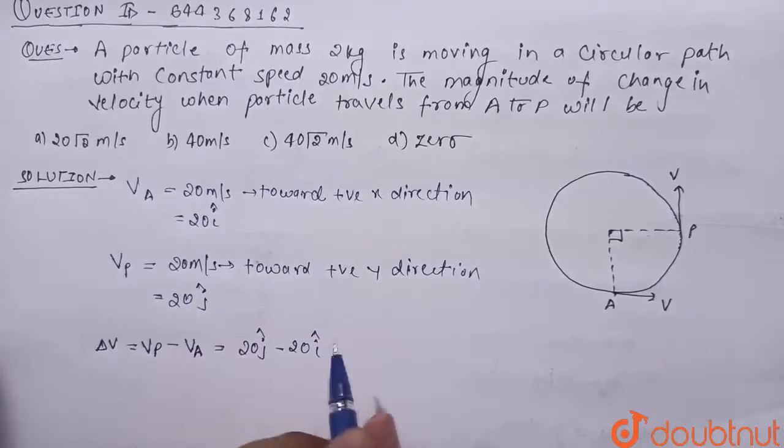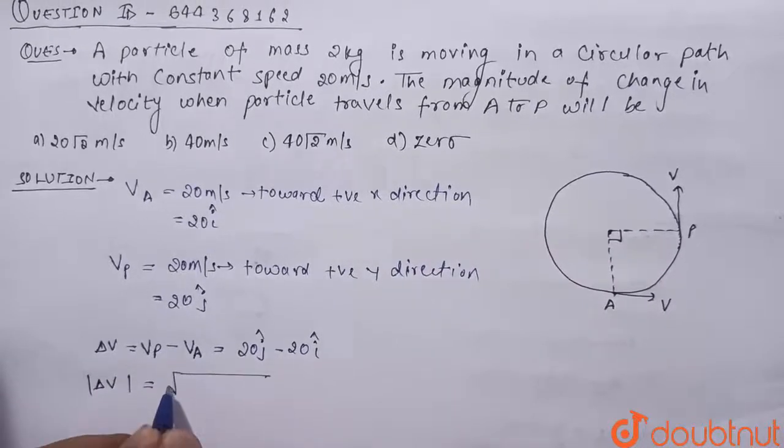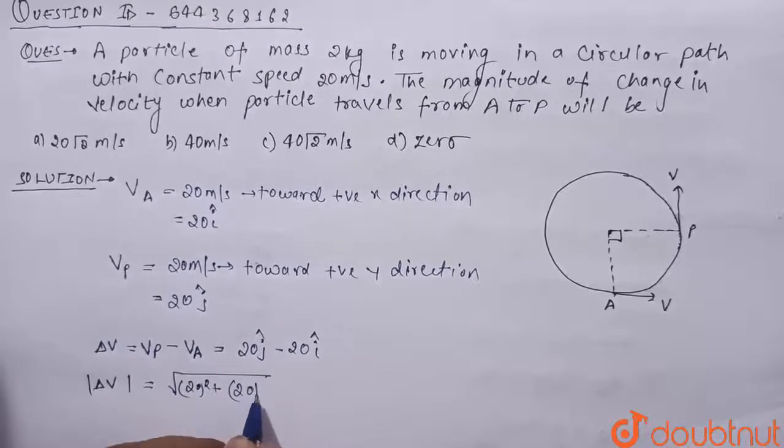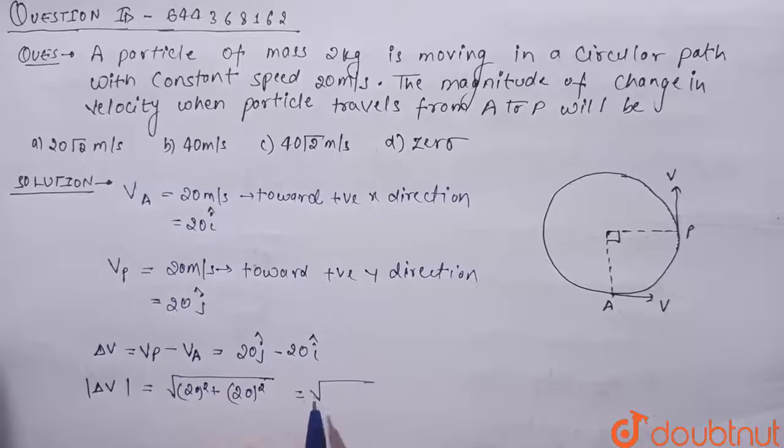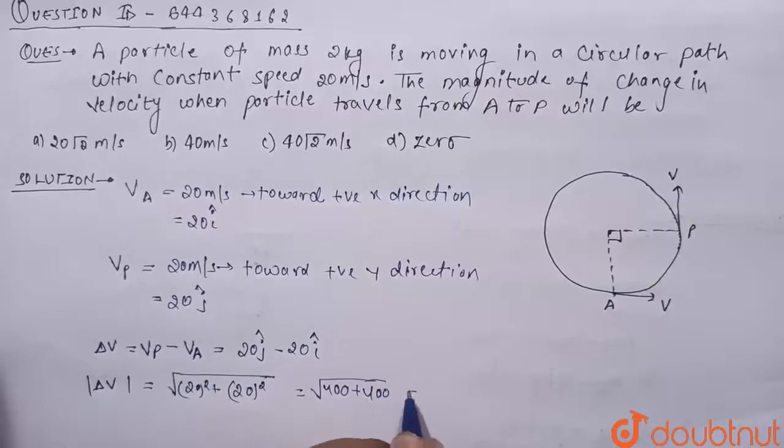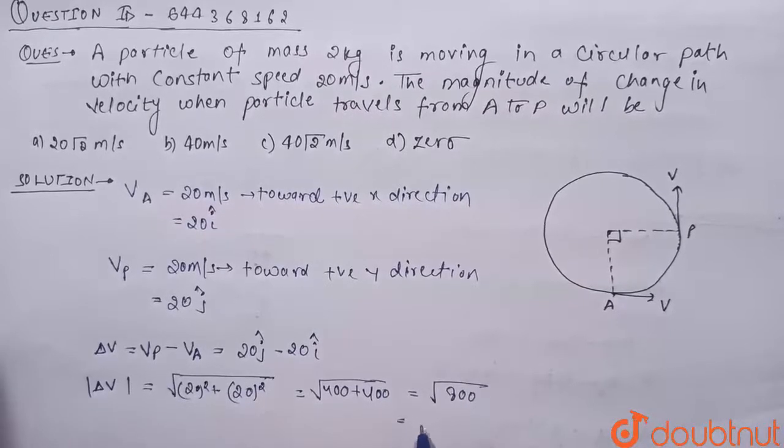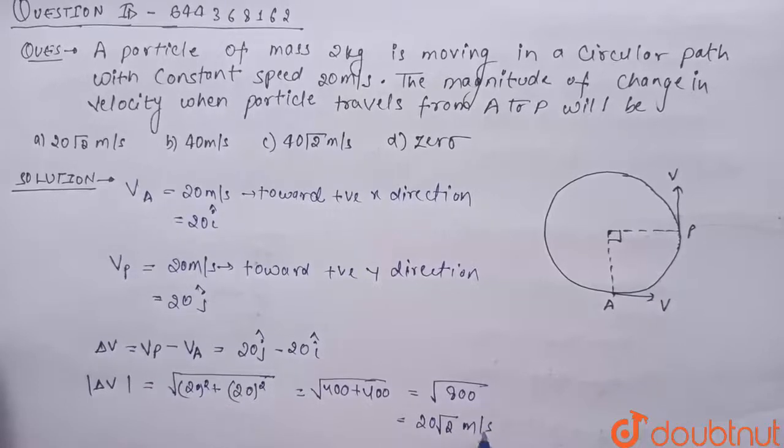But here we have to find the magnitude of change in velocity. So delta V magnitude comes out to be under root of 20 whole square plus 20 whole square, that is magnitude of x whole square plus magnitude of y whole square. So it comes out to be under root of 400 plus 400.